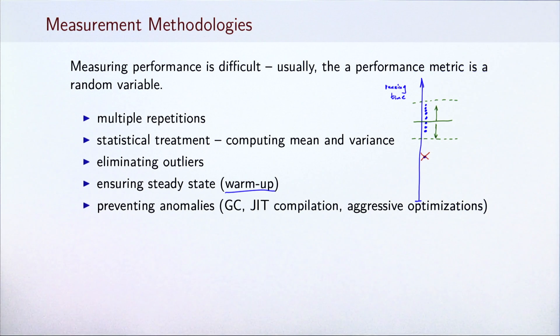Finally, we sometimes need to prevent anomalies that impair our measurements. Garbage collection can be avoided by allocating sufficient memory beforehand. And JIT compilation can be disabled for the purposes of running the benchmark. In some cases, the compiler optimizes parts of the benchmark program that would not be optimized in a real application, because the benchmark is too simple. To prevent this, we often need to restructure the code manually.